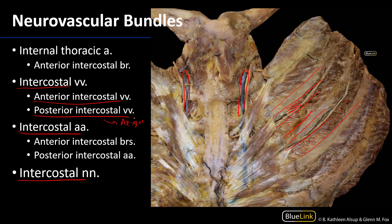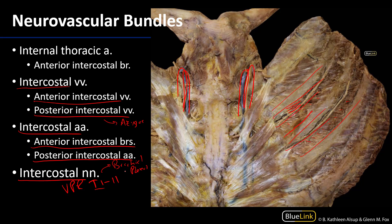The intercostal arteries are anastomoses between anterior intercostal branches of the internal thoracic arteries and posterior intercostal arteries coming from the thoracic aorta, which we won't see until the posterior mediastinum. The dominant blood supply is from the posterior intercostal arteries. The intercostal nerves are ventral primary rami of thoracic nerves T1 through T11. The bulk of T1's ventral primary ramus goes superiorly to the brachial plexus, with the remainder of T1 serving as the intercostal nerve for the first space.